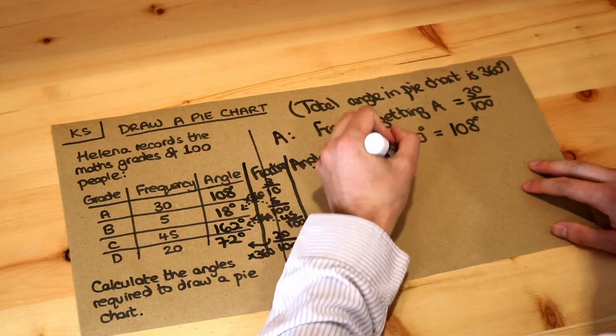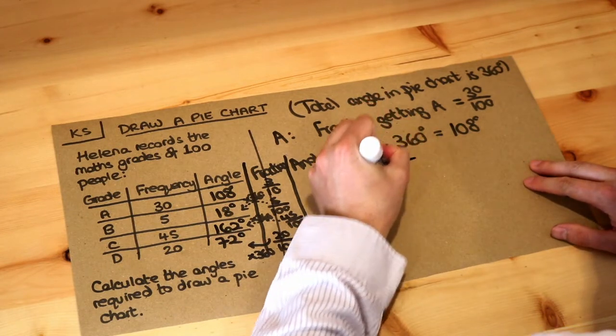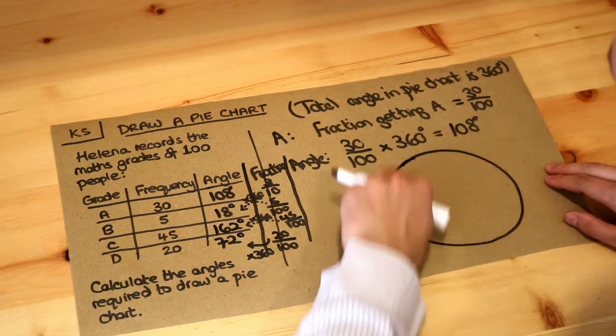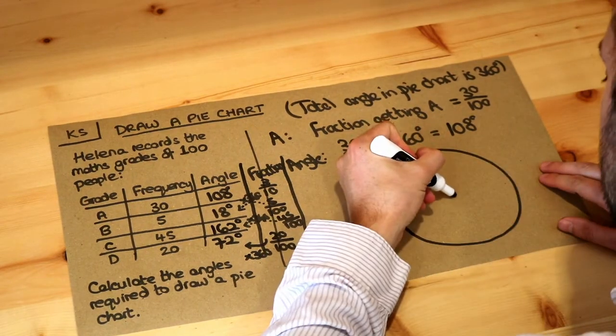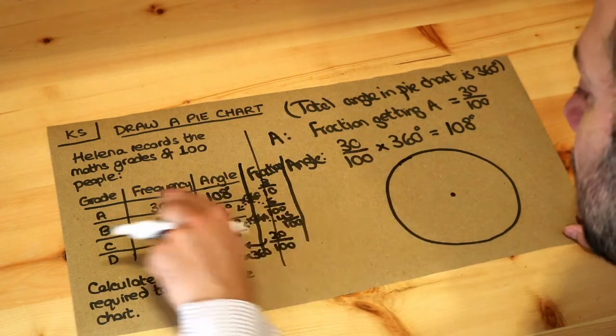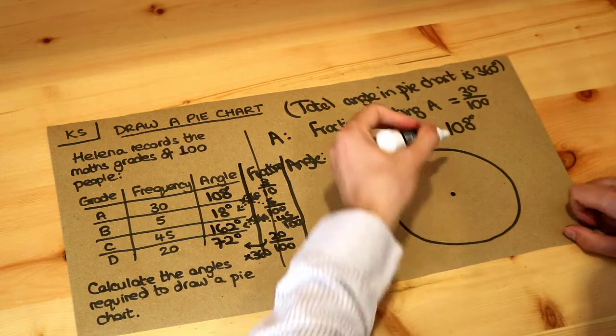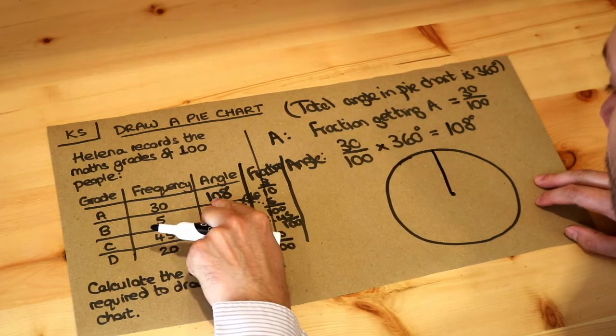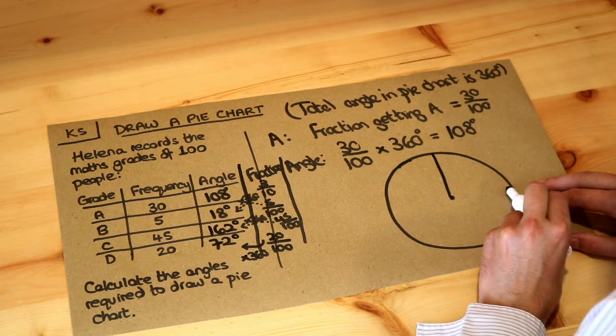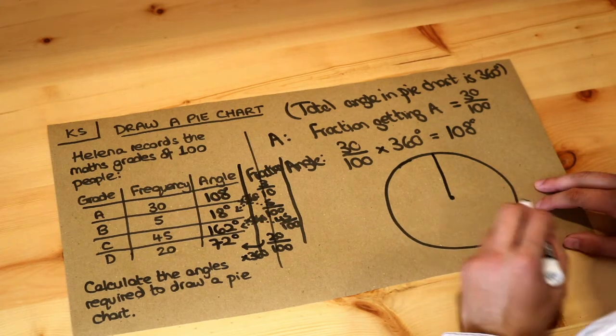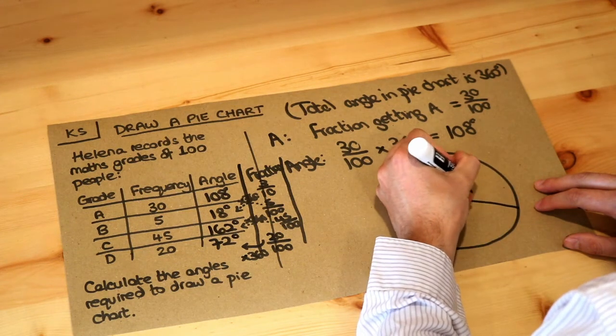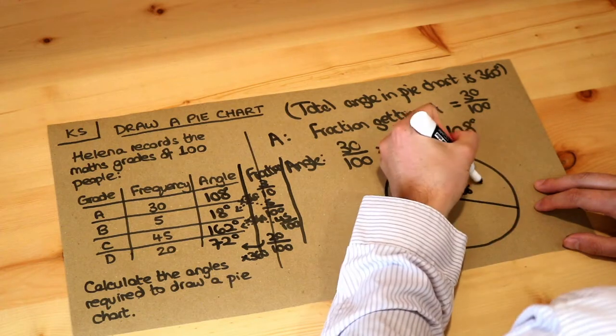So now we could draw this. I don't have a protractor on me, so I can't actually properly measure out these angles, so I'm just going to estimate the pie chart. Obviously you start with a circle, and let's put the center in here. We've got a slice for the grade A of 108 degrees. So if I put a vertical line up, 108 degrees is slightly more than 90 degrees. A 90 degree angle would be a quarter of the pie chart, so 108 degrees is going to be slightly more than that. That's your 108 degrees for grade A.